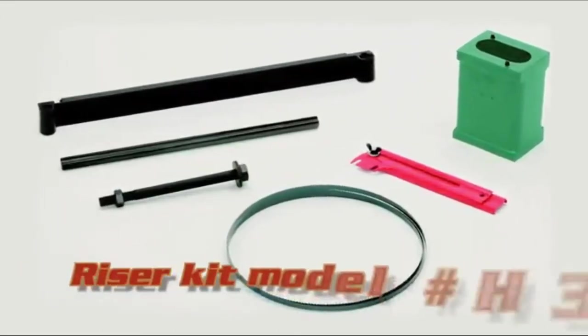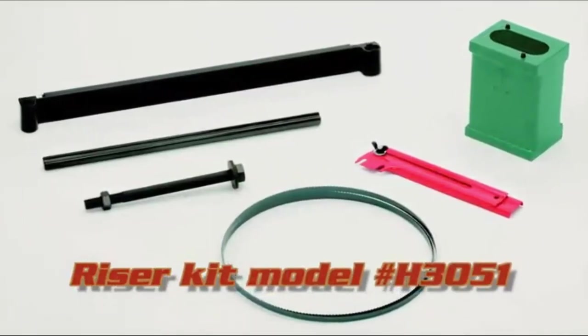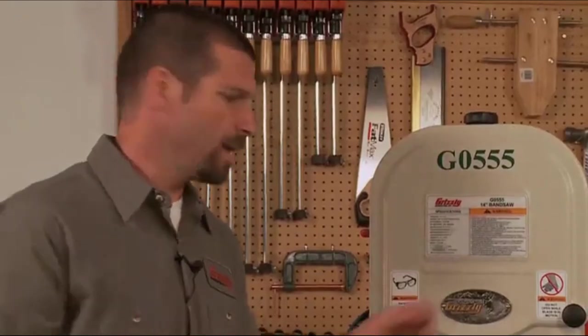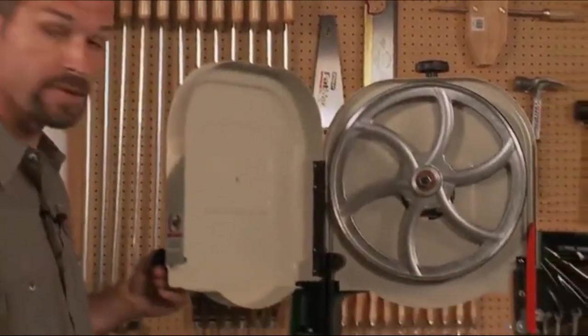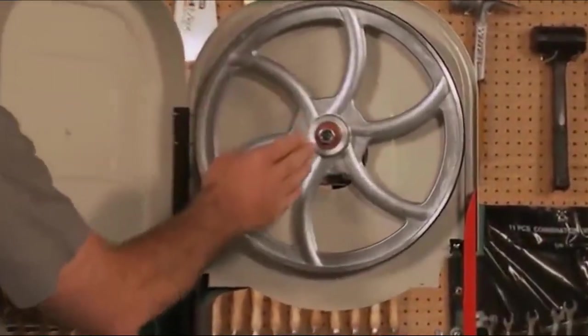The kit's model number is H3051, and the kit includes a block, guard, and a longer blade. The wheels are made of aluminum and are computer balanced for a smooth operation. They also run on heavy duty ball bearings.